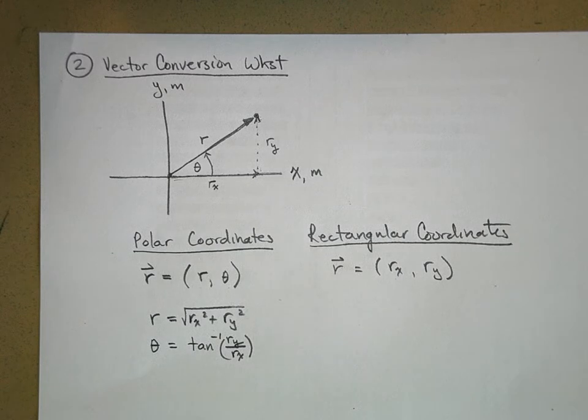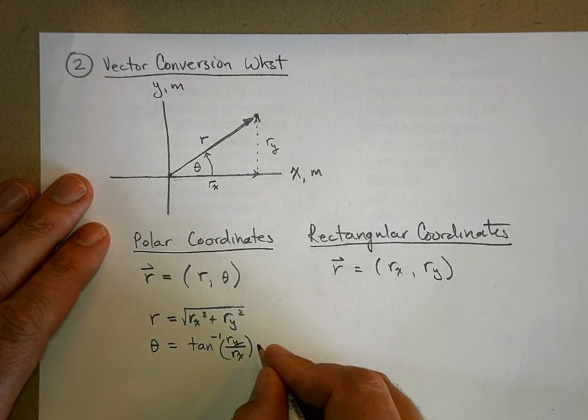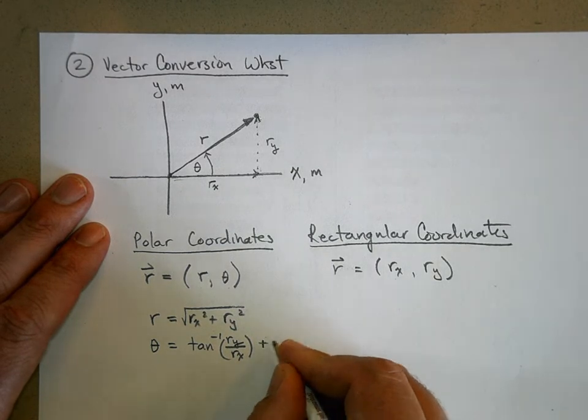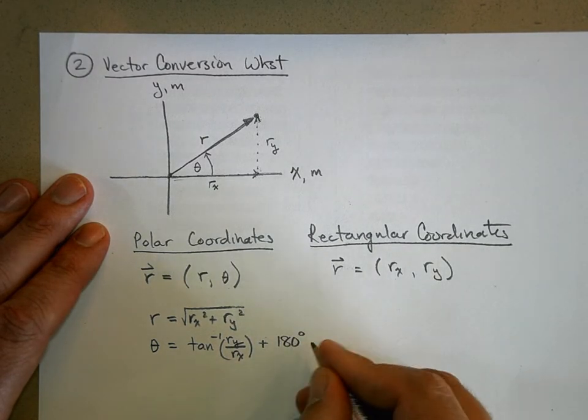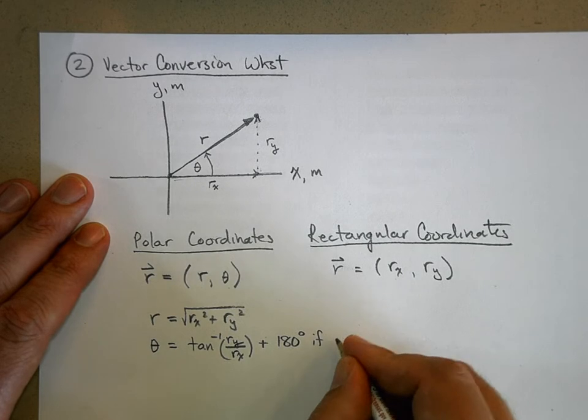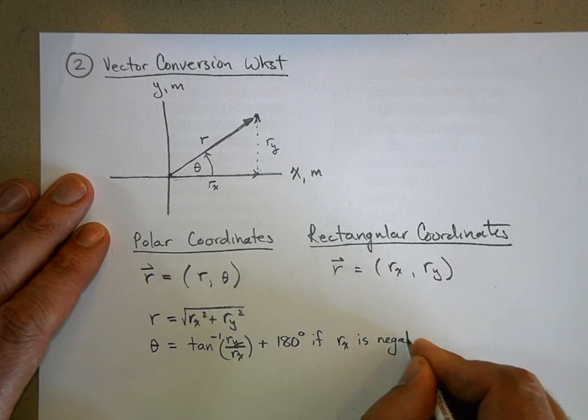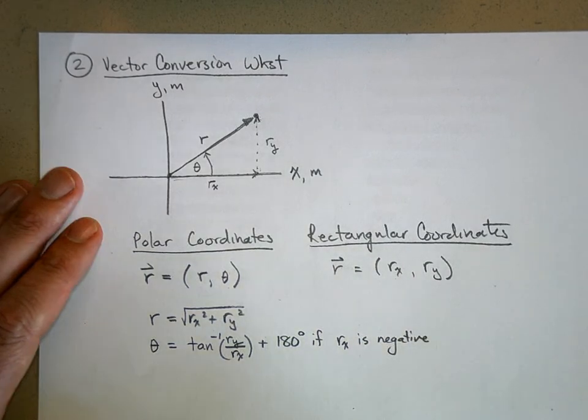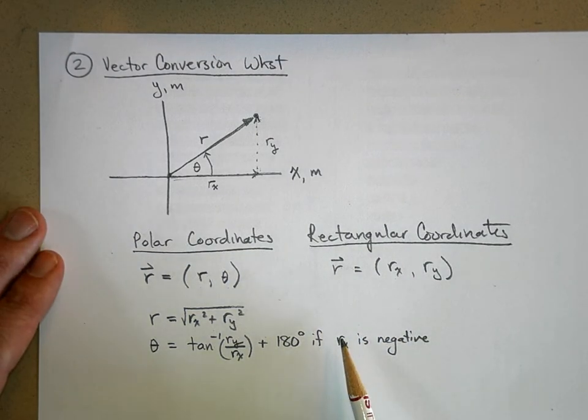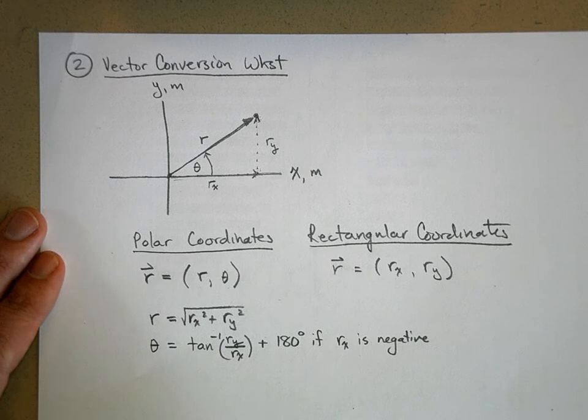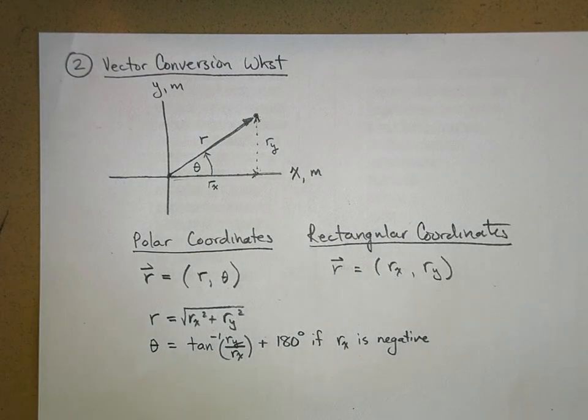Now, I'm going to add something to this, and I'm going to show you why we're going to add it here in a minute. But I'm going to add plus 180 degrees if r x is negative. It turns out that if your x component of your vector is negative, when you use inverse tangent, you have to add 180 degrees to the answer your calculator gives you. And I'm going to show you why in a few minutes.